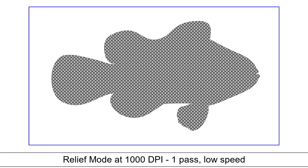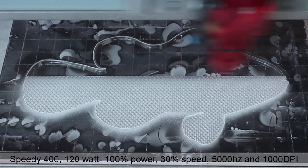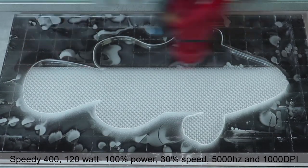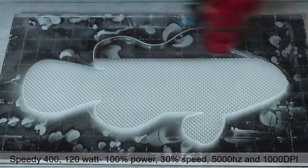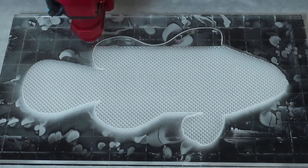After the file has been cut, next is the relief file. The relief or 3D fish scale in this example will be engraved at full laser power at low speed while turning on the relief mode in the Ruby laser software. This example is engraving the file on a Speedy 400 120 watt laser at 100% power, 30% speed, at 1000 DPI for the fish scale texture.